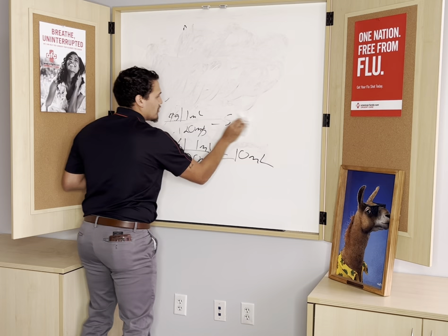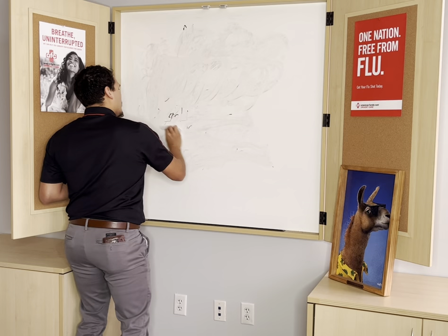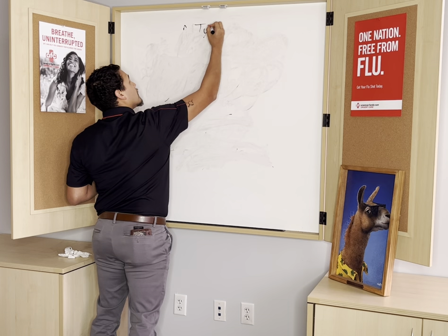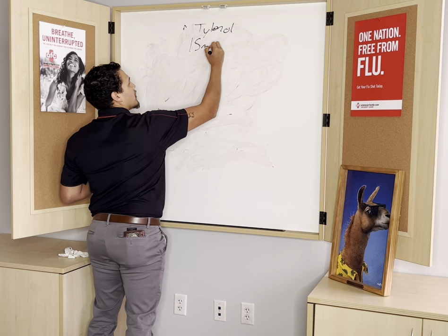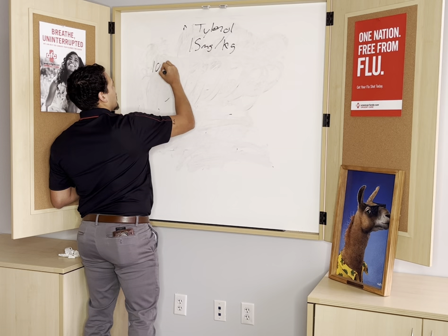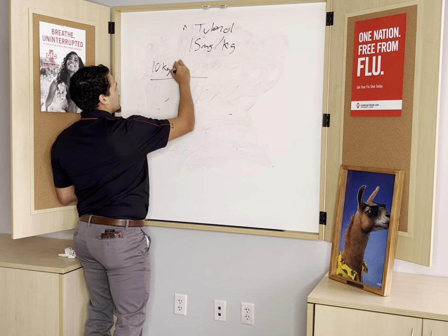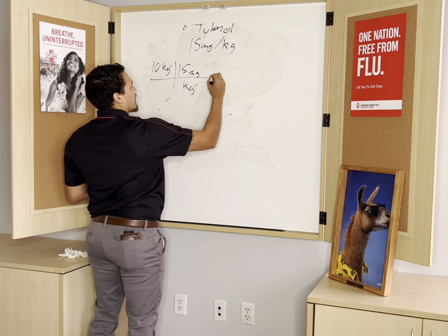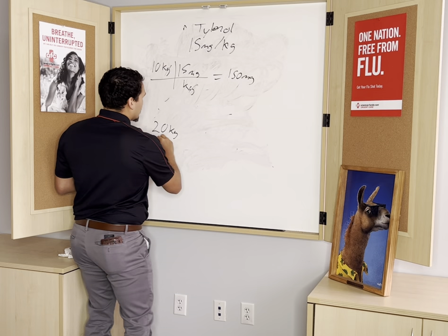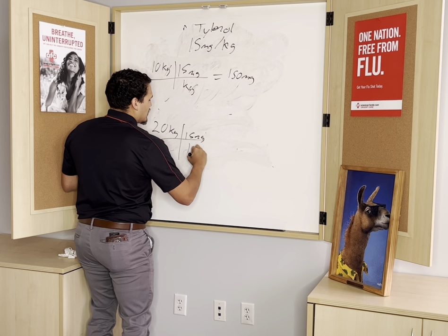Next we'll talk about Tylenol, also known as acetaminophen. The dosing for this one is 15 milligrams per kilogram. We have our 10-kilogram baby and our 20-kilogram baby. We do 15 milligrams per kilogram: our first child gets 150 milligrams, and our second child gets 300 milligrams.